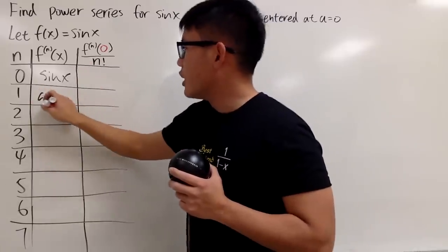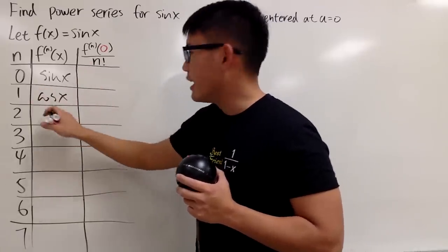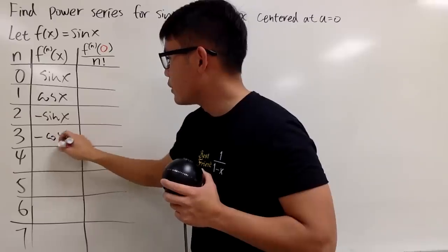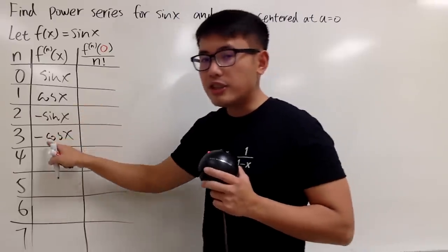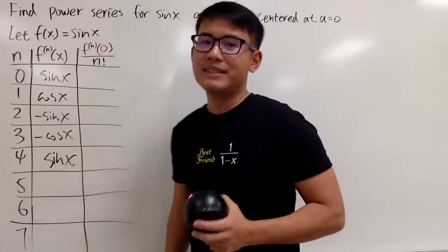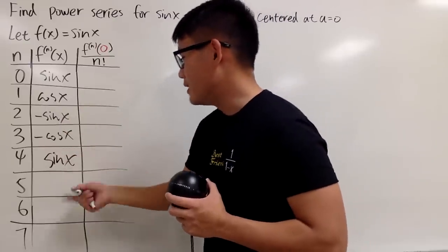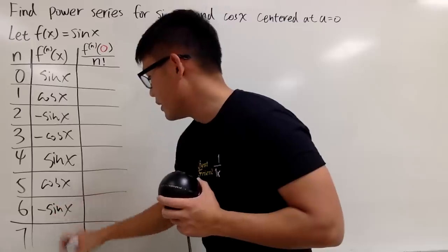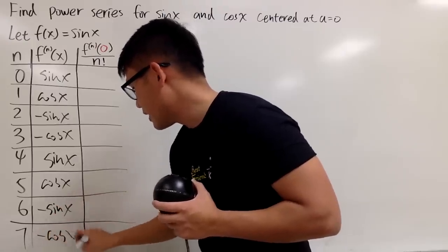Differentiate this, I get cos x. Differentiate this again, I get negative sin x. And do it again, I get negative cos x. And when you differentiate negative cos x, you get sin x back. Now, you pretty much repeat, and I'll just write down more terms right here. And lastly, you have negative cos x. So just make a table like this.